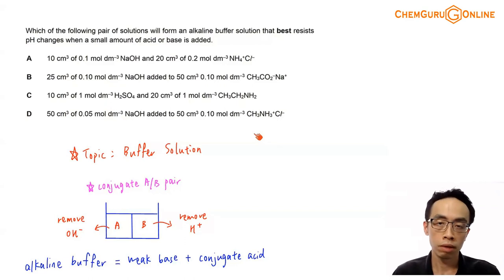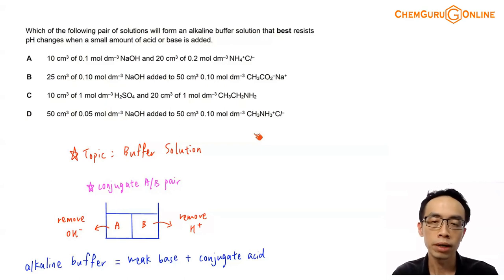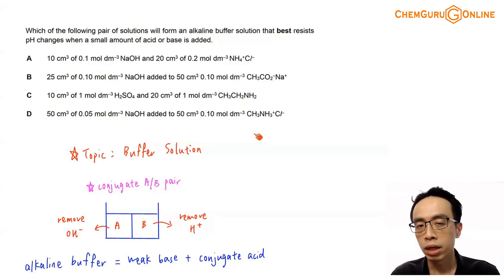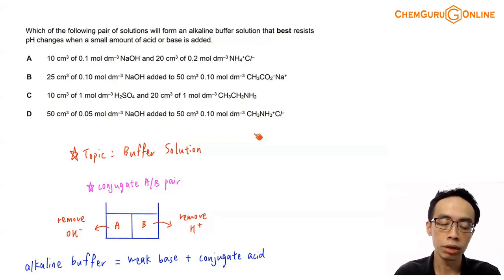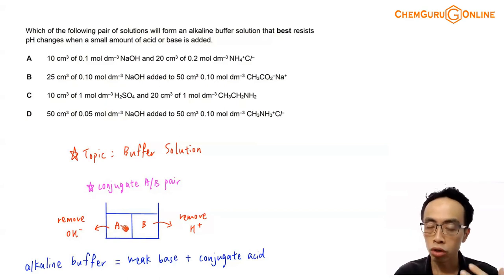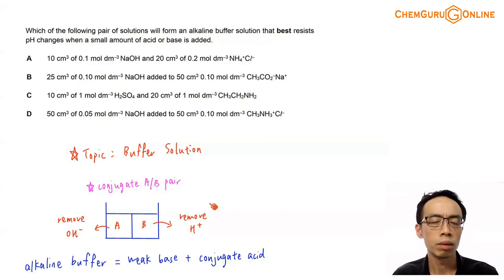First, what is a buffer solution? A buffer solution is a solution that can maintain pH when small amounts of H⁺ or OH⁻ is added to it. The reason why a buffer can maintain pH is because inside this buffer there is an acid and a base. Inside this buffer solution, I will have an acid — the job of the acid is to remove OH⁻ — and I also have a base — the job of the base is to remove H⁺. So essentially a buffer is a mixture of acid and base.